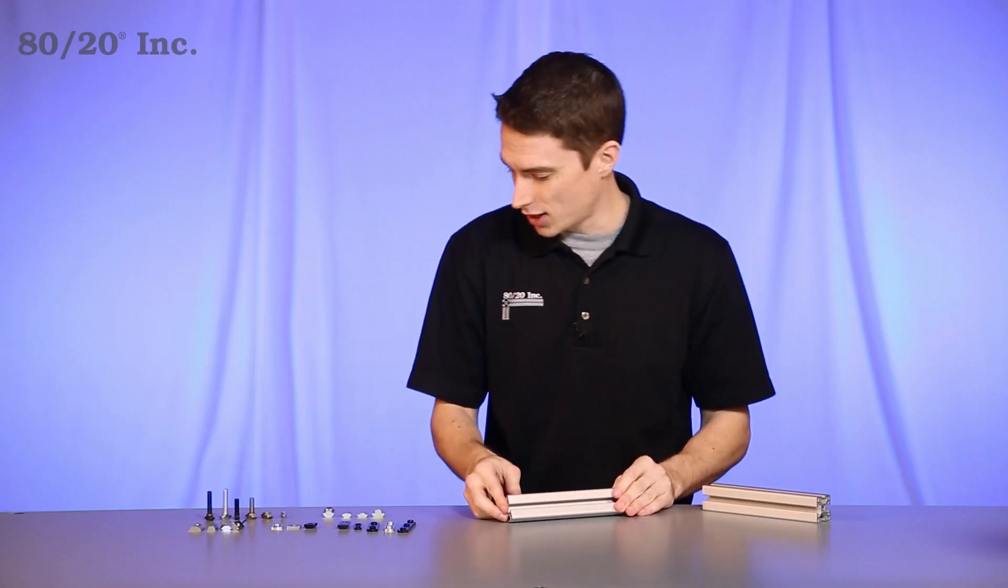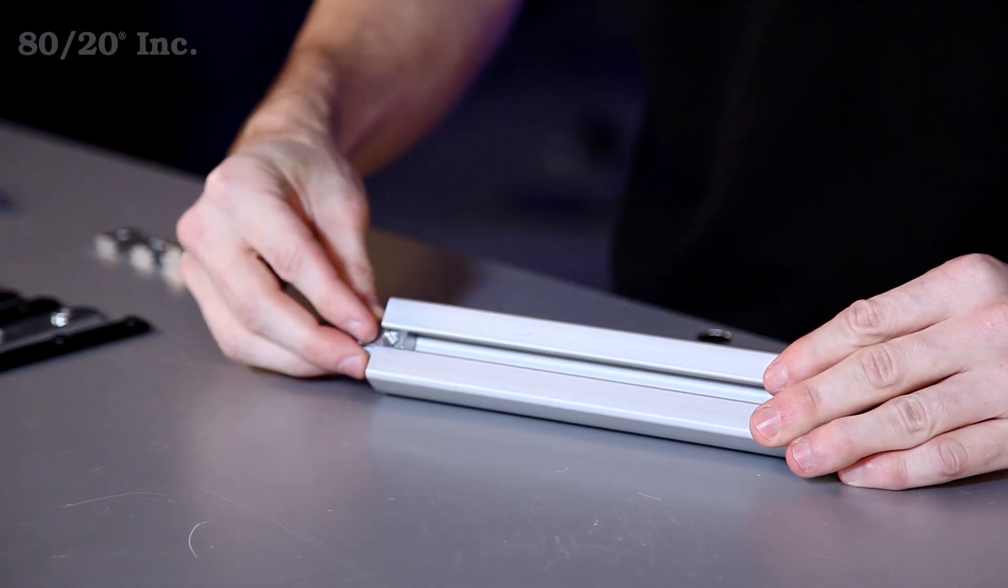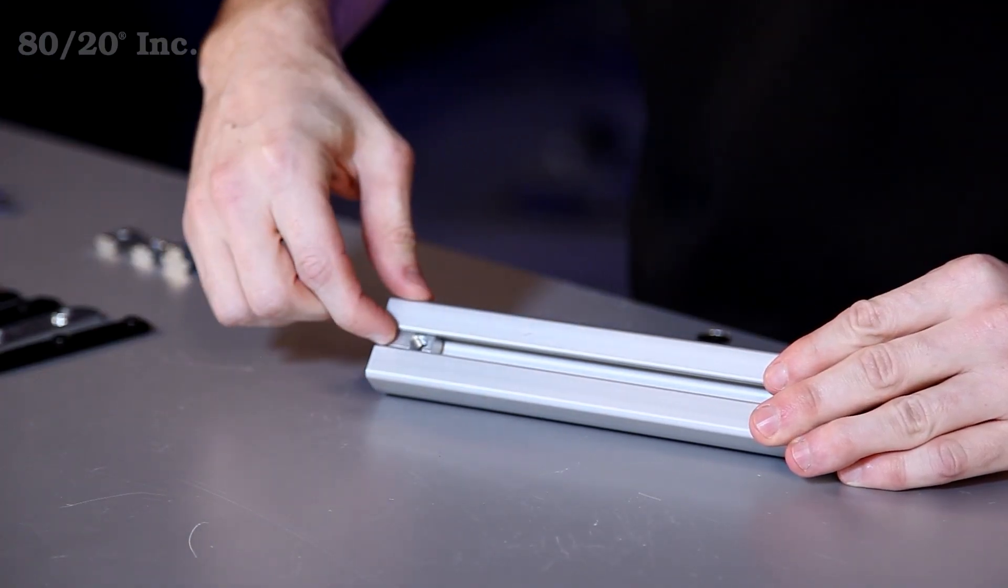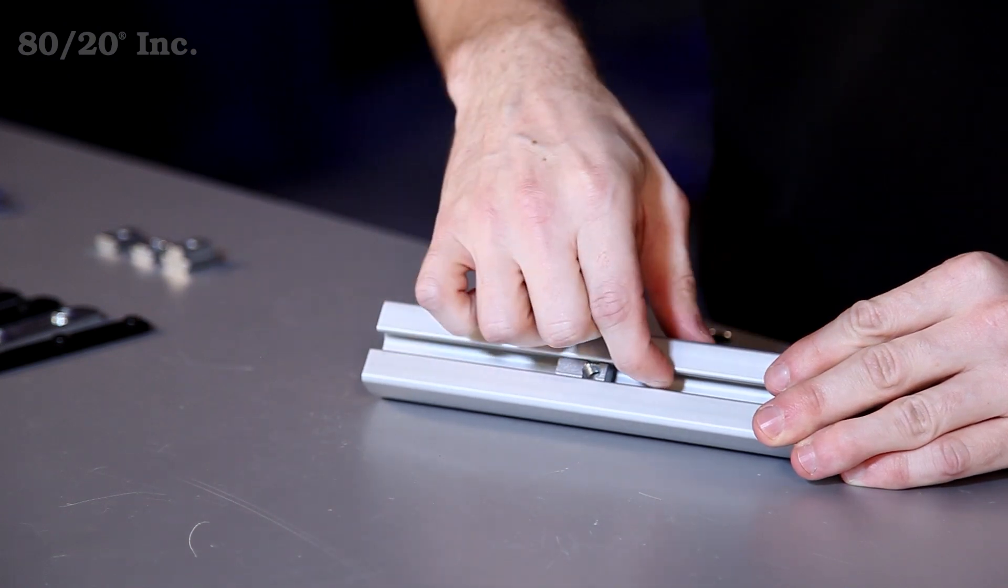One last T-nut we're going to talk about is the self-aligning T-nut. This one helps fill any open space in the T-slot and helps you line up your bolts a lot easier during install.